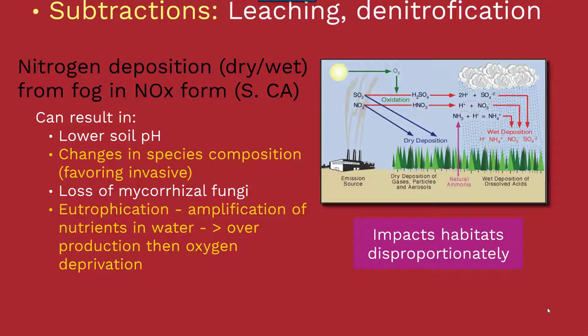There are certainly some balances that can occur with these different nutrients within ecosystems. In this particular example, where there's a proximity to pollution, there's going to be a disproportionate impact on some habitats or patches versus others, so understanding how they're connected and their spatial orientation is really important.